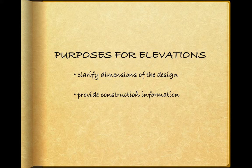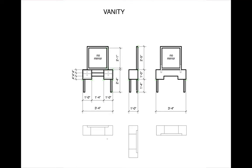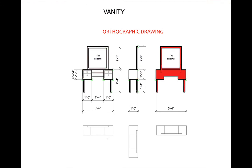Elevations also provide construction information. This is called an orthographic drawing. This is a scenic unit needed for one of the set designs that has to be constructed from scratch. Notice that we see this piece in full front, side, and back view, each one giving full dimensions so the scene shop can physically recreate that piece. Note that below the front, side, and back views are ground plans of those pieces as well.